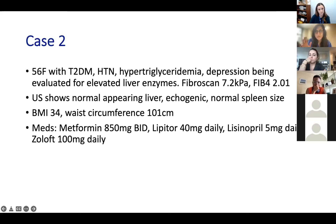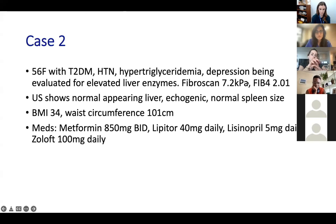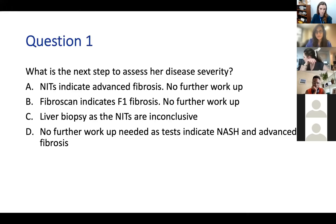Next case: a 56-year-old female with diabetes, hypertension, hypertriglyceridemia, and depression, evaluated for elevated liver tests. She has a FibroScan of 7.2 and a FIB-4 of 2.01. Ultrasound shows a normal-appearing echogenic liver with normal spleen size. BMI is 34 with a waist circumference of 101. Medications include metformin, Lipitor, lisinopril, and Zoloft. First question: what is the next step to assess disease severity? Options: A—non-invasive tests indicate advanced fibrosis, no further workup; B—FibroScan indicates stage 1 fibrosis, no further workup needed; C—liver biopsy as non-invasive tests are inconclusive; or D—no follow-up needed as tests indicate NASH and advanced fibrosis.